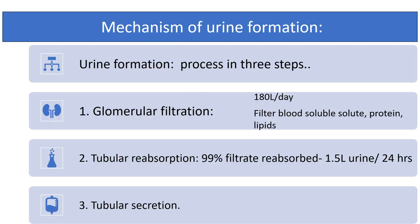Functions of the kidneys include excretion of waste products from the body, regulatory functions like acid-base, fluid and electrolyte balance, excretion of nitrogenous waste substances, and hormonal functions like production of angiotensin, prostacyclin, erythropoietin, and activation of vitamin D. Urine formation occurs in three steps. The first step is glomerular filtration, where approximately 180 liters of fluid filter through the glomeruli containing blood-soluble solutes, proteins and lipids. After filtration, 99% of fluid is reabsorbed through tubular reabsorption, and 1 to 1.5 liters of urine are formed in 24 hours. This urine contains sodium, potassium, chloride, bicarbonate, amino acids and glucose.